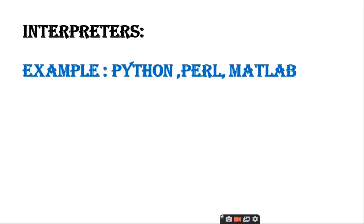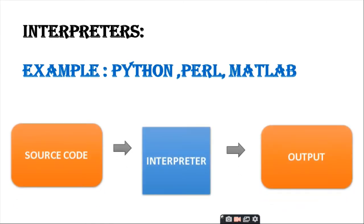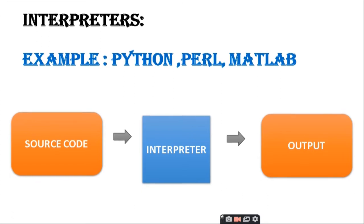Interpreters, instead of producing a target program as a translation, perform the operations implied by the source program directly. For example, Python, Perl, and Matlab use interpreters. An interpreter also converts source code and generates output directly.